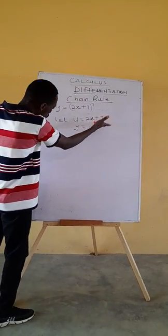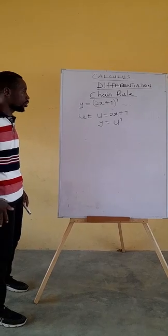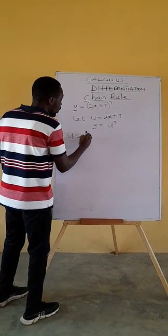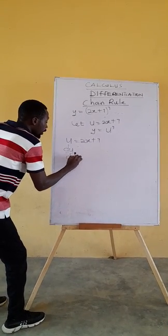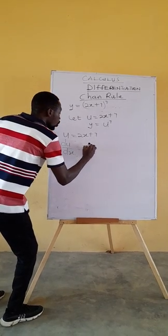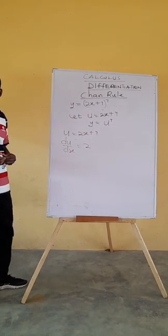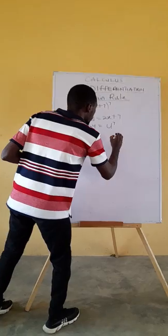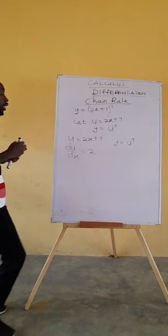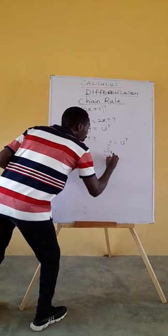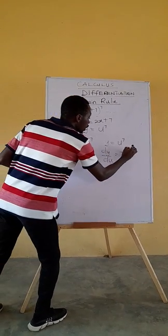We differentiate these two equations with respect to their individual independent variables. So if u equals 2x + 7, the derivative du/dx will be equal to 2. Remember the differentiation of the linear is the coefficient of the variable and the differentiation of the constant is 0. Then y equals u^7. To find the derivative, that's dy/du, drop the 7, subtract 1 from the exponent, that's 6.